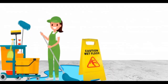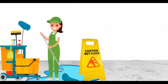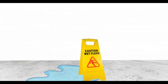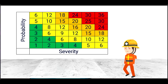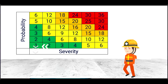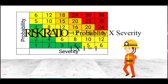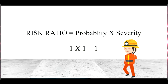After evaluating the risk matrix, we go through the control measures. For this scenario, we can assign a housekeeper to clean the wet floor, eliminating the slippery surface. After ensuring control measures, we evaluate the residual risk ratio using the risk matrix again. Now there is no wet floor, so there is no chance of falling. We assume probability as 1 and severity as 1. Therefore, 1 × 1 = 1, which is our residual risk ratio.